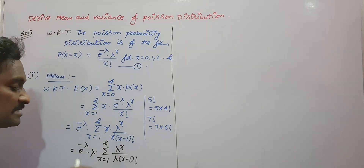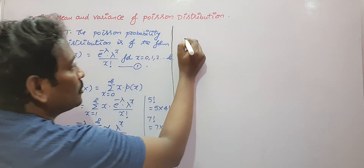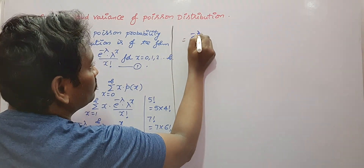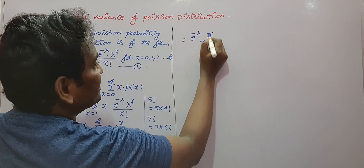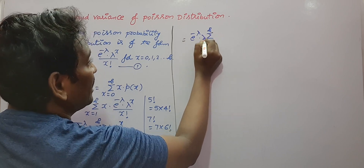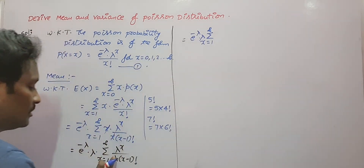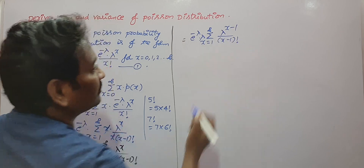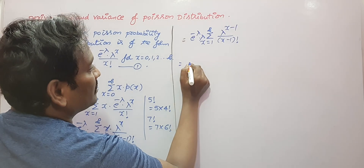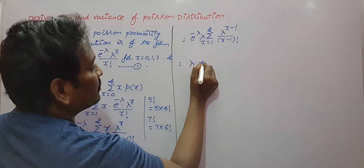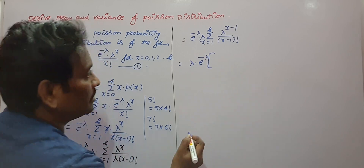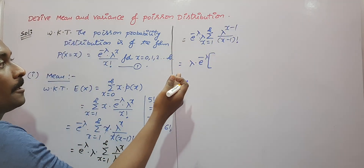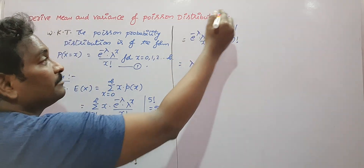We now have e^(−λ) into summation from x = 1 to infinity of λ^(x−1) / (x−1)!. We factor out λ to get λ · e^(−λ) times a bracket. Expanding the bracket by substituting x = 1 gives λ^0 / 0! = 1; x = 2 gives λ / 1!; x = 3 gives λ² / 2!; and so on up to infinitely many terms.